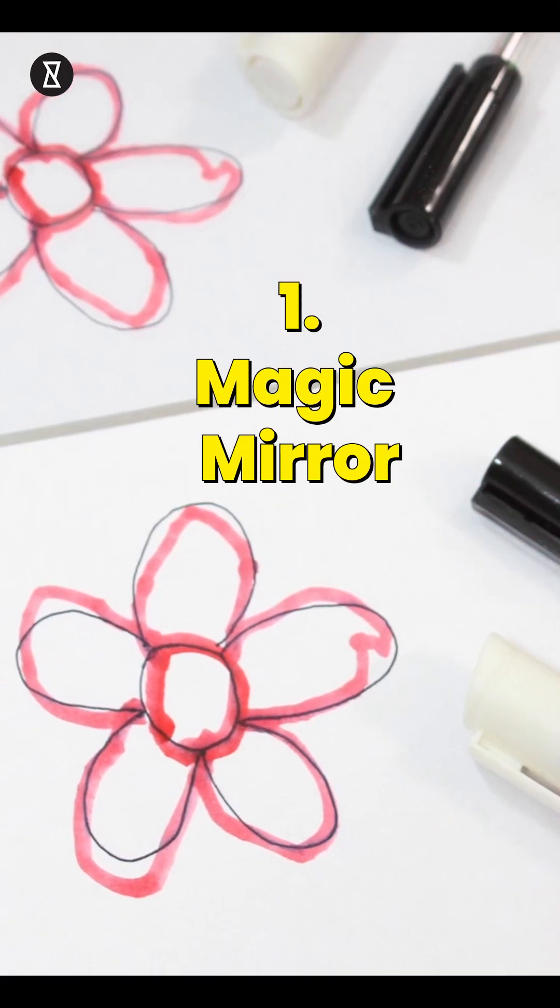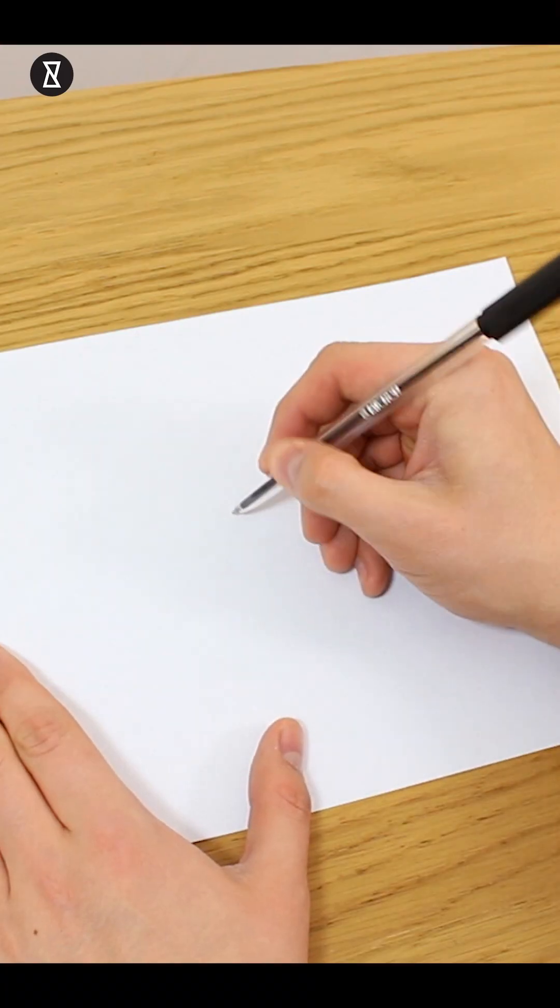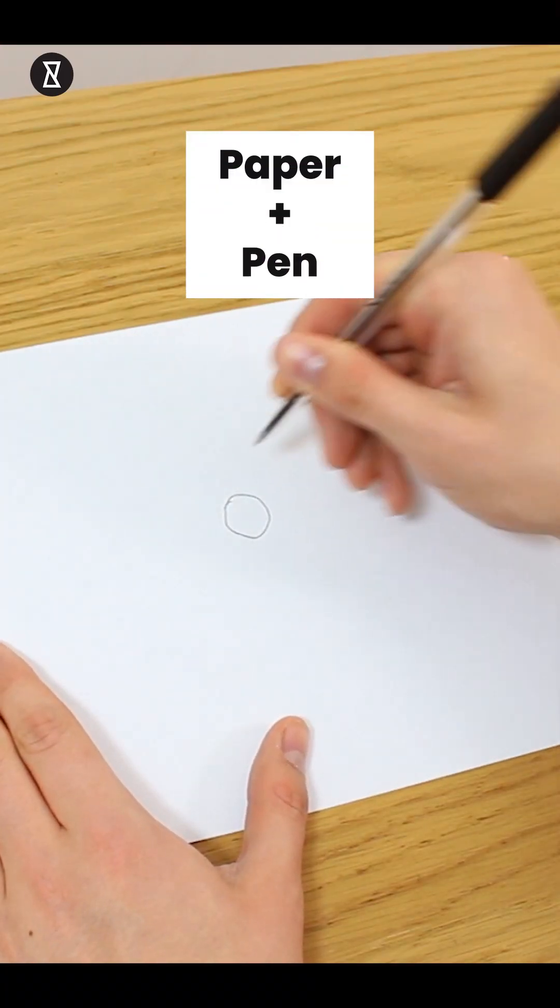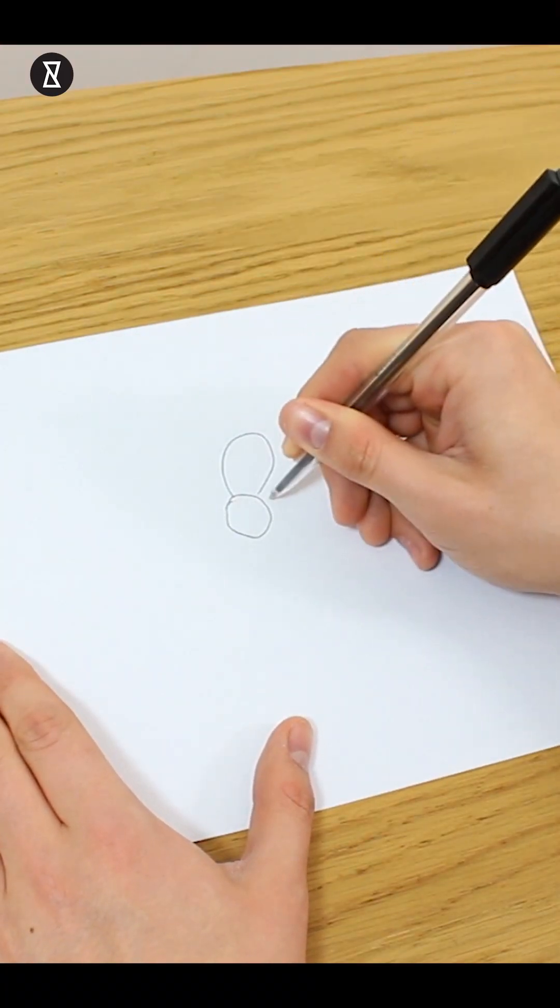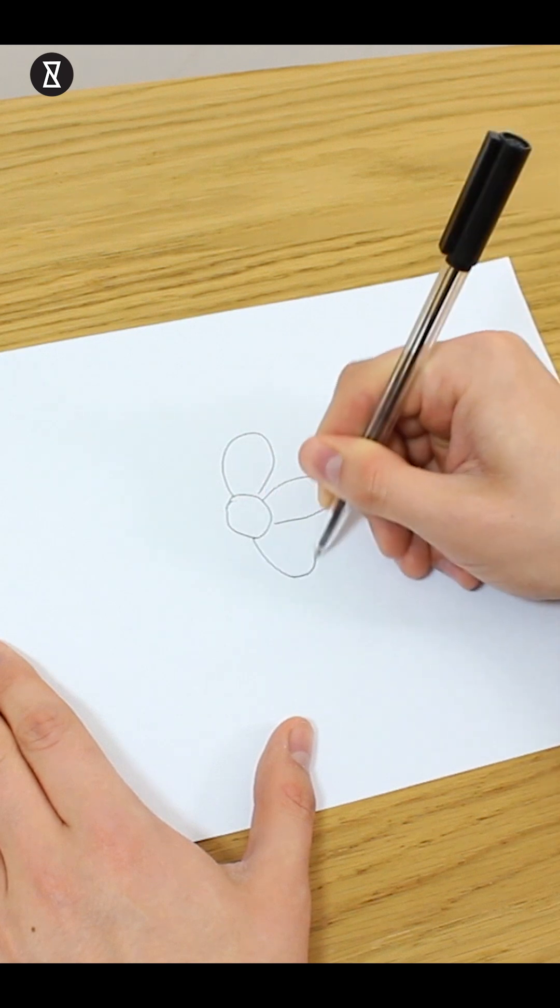Today we're going to show you the magic mirror trick. The first step is to take the piece of paper and your pen and draw a simple shape on it. In this case, I've decided to draw a flower.